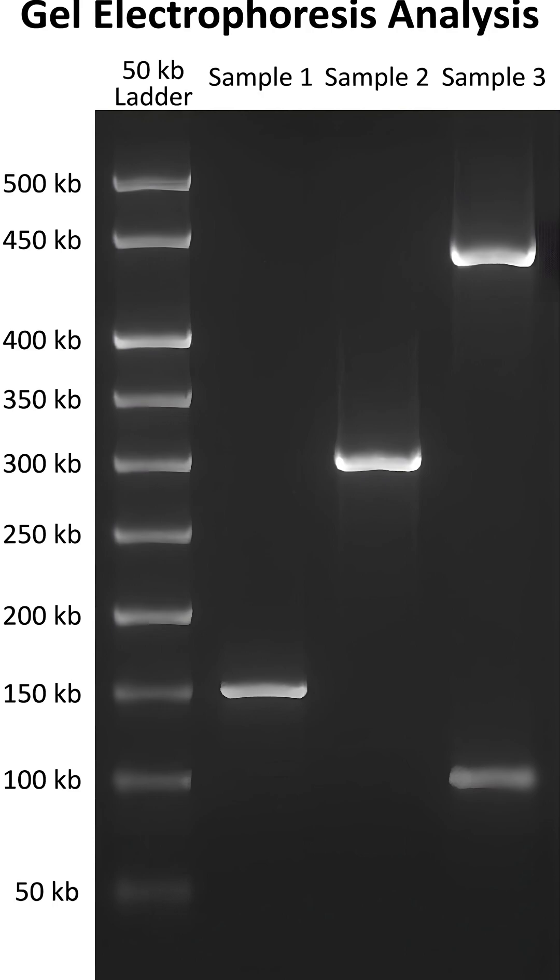Next to that, they would have something called a ladder. A ladder consisted of a sample with known particle sizes. Those known particle sizes could have been, for example, 50 kilobase pairs, 100 kilobase pairs, 150, 200, 250, and so on up.